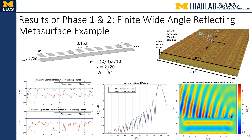We have a finite, eight-lambda-wide, wide-angle reflecting metasurface that takes a normal incident plane wave and reflects it to 70 degrees off the normal. The metasurface dimensions are shown here: lambda/20 separation between the metasurface elements and the ground plane, with finite discrete sheet impedances all coupled through the linear system. Phase one results in the complex-valued sheet impedance shown on the left and the pattern shown in the center of the slide. Phase two, after optimization, results in a completely reactive sheet impedance, with the far-field pattern identical and the real part of the reflected near field shown in the figure on the lower right.